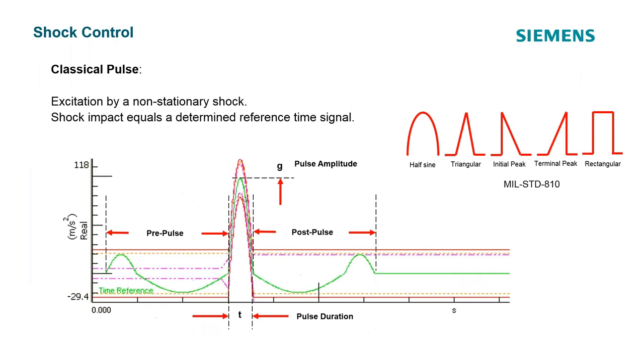Let's talk about classic shock first. In classic shock we are defining our target using an acceleration versus time pulse. We're moving away from the frequency domain when we get into classic shock. This time pulse has three main components: the main pulse, a pre-pulse, and a post-pulse.